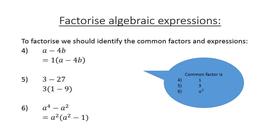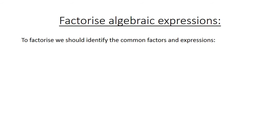4. Common factor is 1. Number 5 is 3. And then we have number 6: A to the power of 2. 6A to the power of 2 minus 4A. What is the common factor? 2A. We have in brackets (3A minus 2).